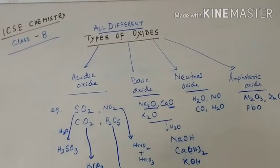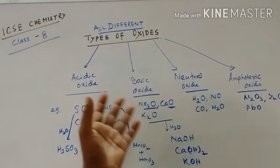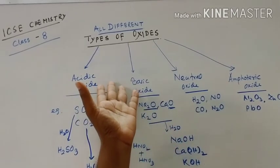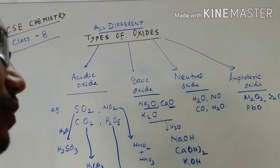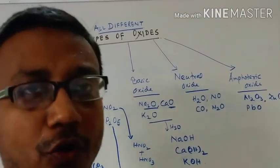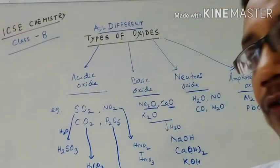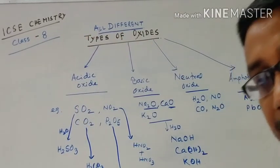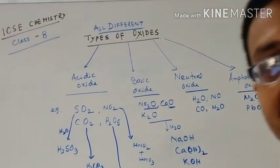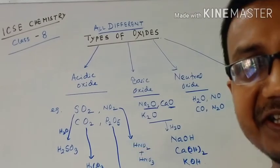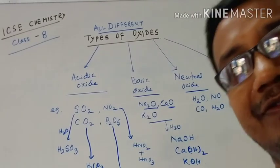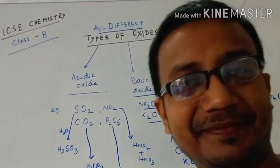So, the chapter covers acidic oxide, basic oxide, neutral oxide, and amphoteric oxide. Hope you liked this video — it's a short video made for class 8. Don't forget to subscribe my channel, please share it with other friends, and don't forget to leave comments. Thank you students, goodbye!